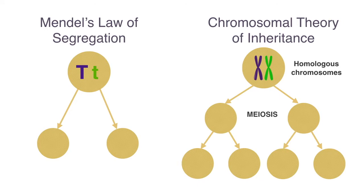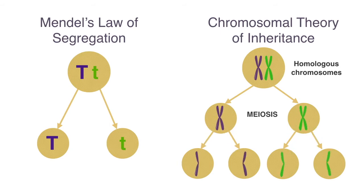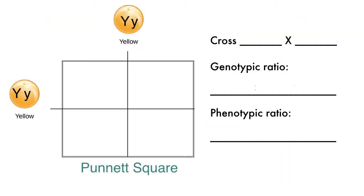Mendel stated that the factors separate from each other in the process of making gametes — eggs or sperm cells — which is exactly what happens during meiosis I, when the homologous chromosomes separate into different cells, which then go on to complete meiosis II and form the gametes. A Punnett square can help us use the Law of Segregation to predict the genotypes and phenotypes of any particular cross.